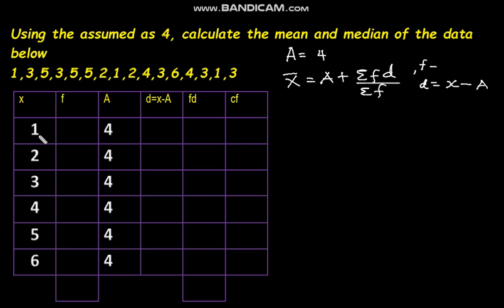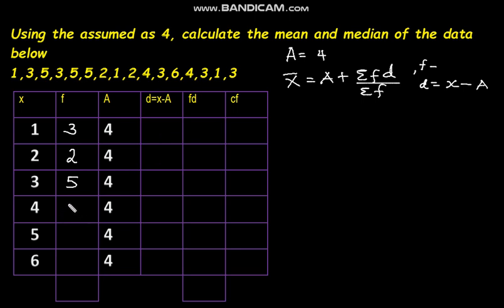When our sample is 1, that is X equals 1, 1 has repeated 3 times in our data. When the sample is 2, 2 has repeated 2 times. When the sample is 3, 3 has appeared 5 times. When the sample is 4, 4 has repeated 2 times. When the sample is 5, 5 has appeared 3 times. And when the sample is 6, its frequency is 1.